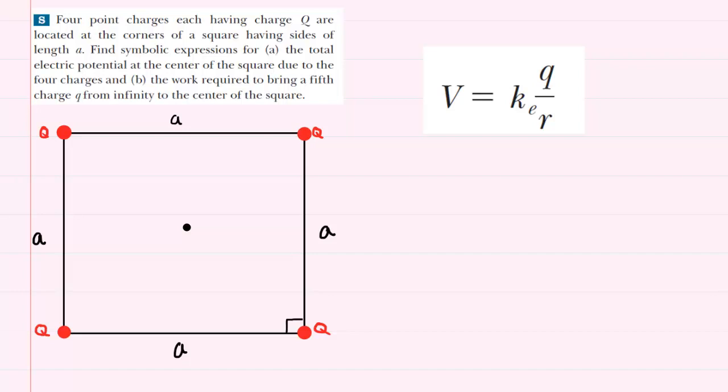the location is at the center of the square, so what we're going to need is an expression for the distance from the charge Q to the center of the square.